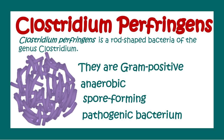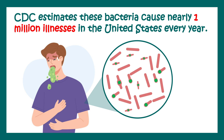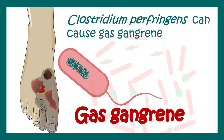In this video we'll look at all these aspects of Clostridium perfringens from the clinical point of view. The CDC estimates that this bacteria can cause roughly 1 million illnesses in the United States every year, and this particular bacteria is a cause of food poisoning. Other than that, Clostridium perfringens is well known to cause gas gangrene, which is a notorious pathological symptom.